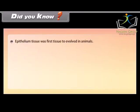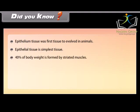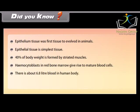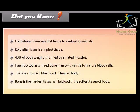Did you know? Epithelial tissue was the first tissue to evolve in animals and is the simplest tissue. 40% of body weight is formed by striated muscles. Hemocytoblasts in red bone marrow give rise to mature blood cells. There is about 6.8 liters of blood in the human body. Bone is the hardest tissue while blood is the softest tissue of the body.